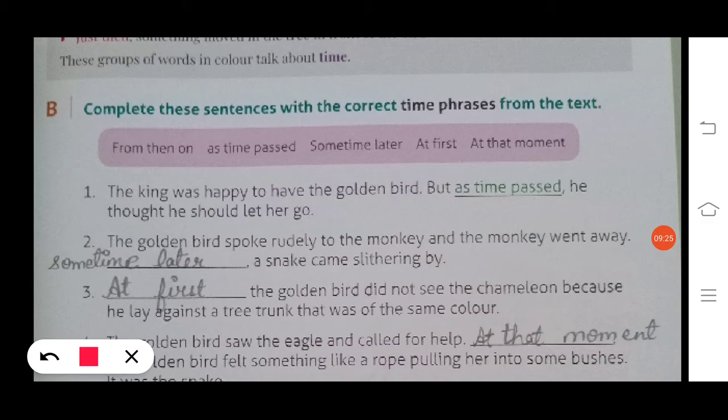Number two: the golden bird spoke rudely to the monkey, and the monkey went away. Sometime later, a snake came slithering by. Number three: at first, the golden bird did not see the chameleon because he lay against a tree trunk that was of the same color.